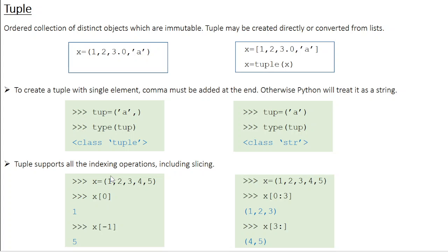Just like lists, tuples also support all indexing operations including slicing. Note: if you are following the guidebook by Ina Shussar, there is a mistake — it states that a tuple doesn't support indexing, but in fact tuples do support indexing. If you have a tuple x equal to 1, 2, 3, 4, 5, each element is identified by its corresponding index. The first element always has index 0. You can access any element using its index — for example, x[0] fetches the first element.